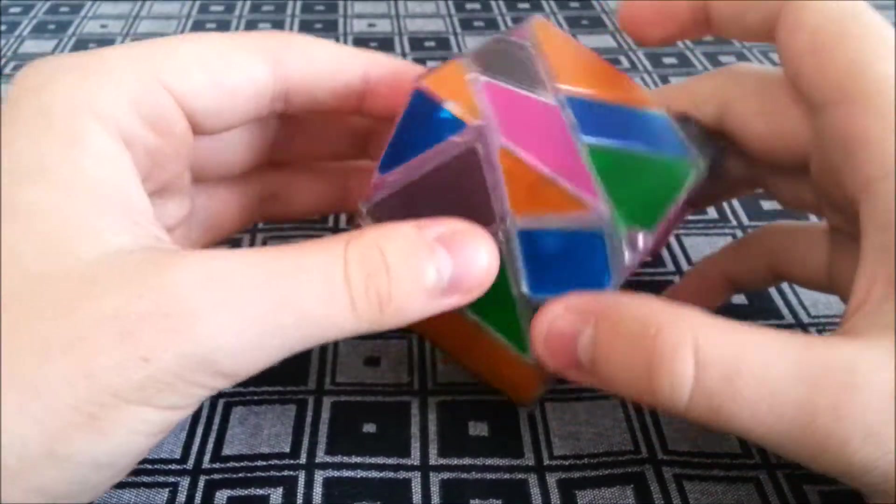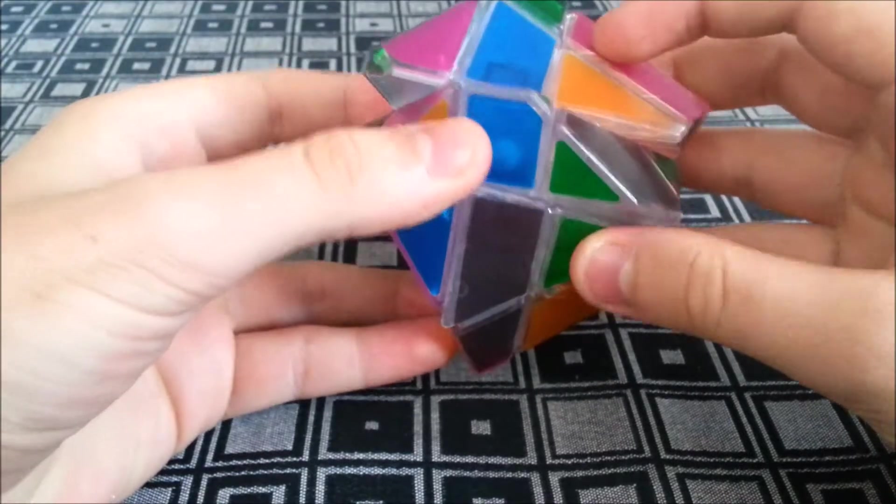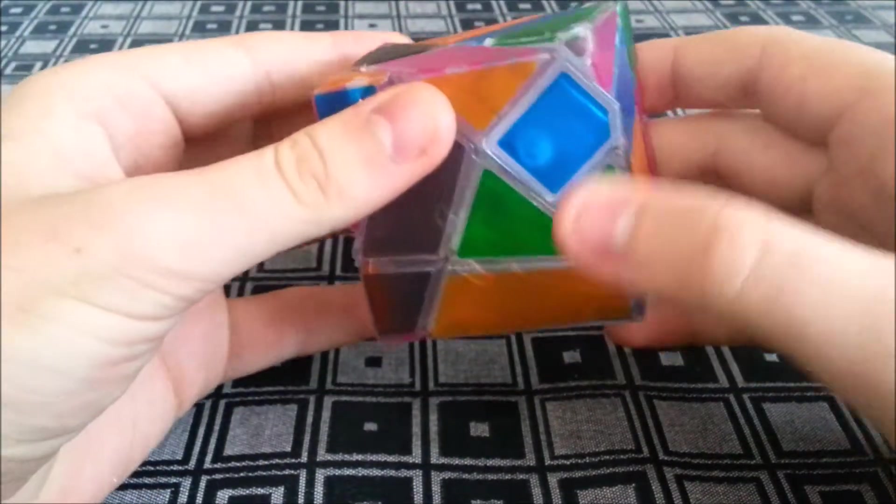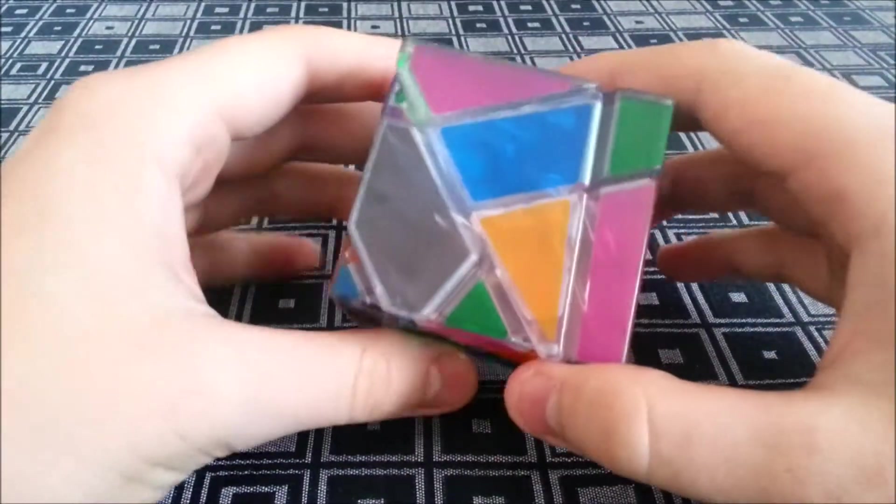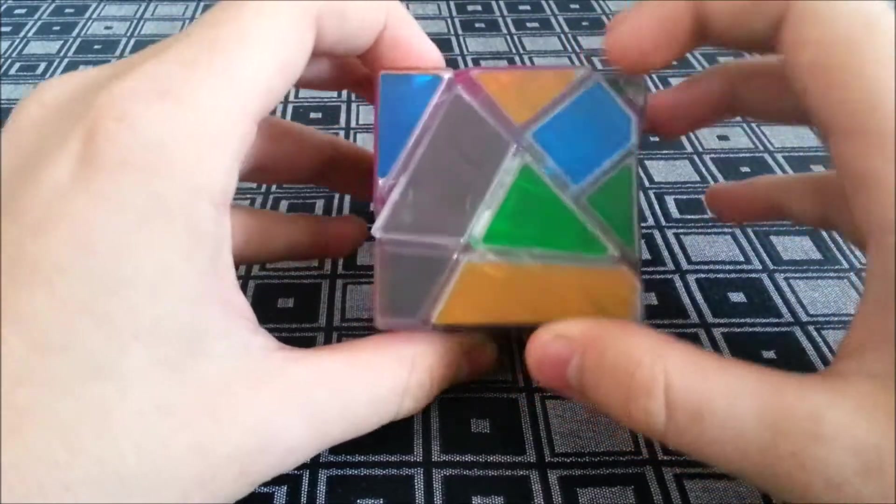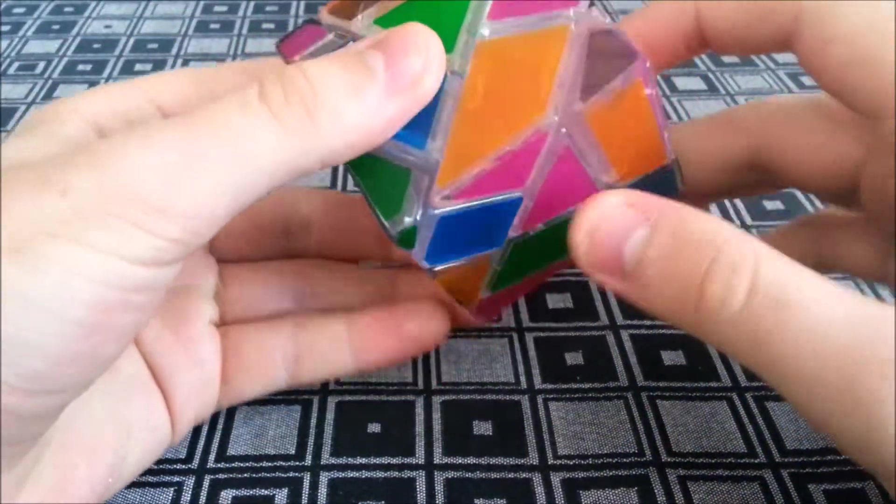So this is a normal ghost cube. As you can see, you can just put it on off axis and it functions like a normal 3x3 as a ghost cube would, but it has different colored stickers, unlike normal ghost cubes which either have the same colored stickers on all pieces or they would have no stickers at all.